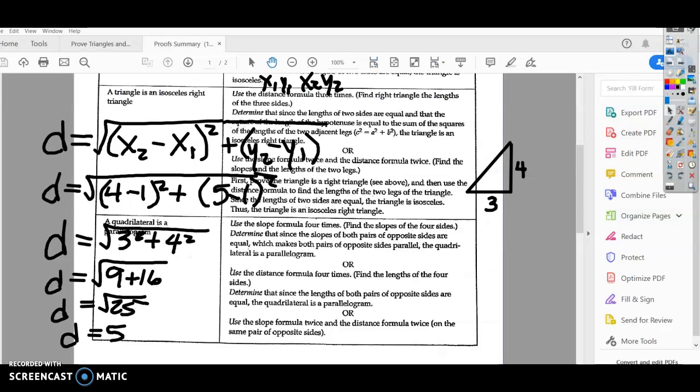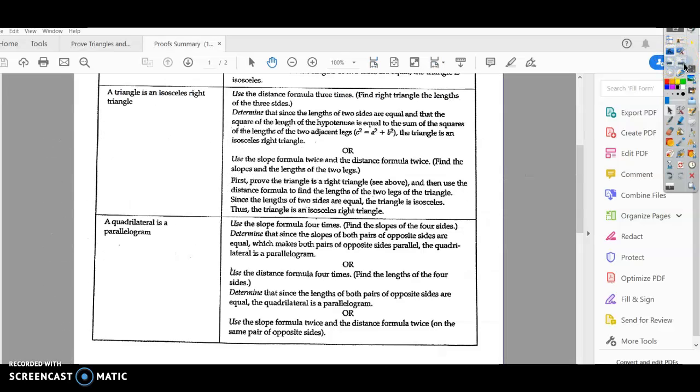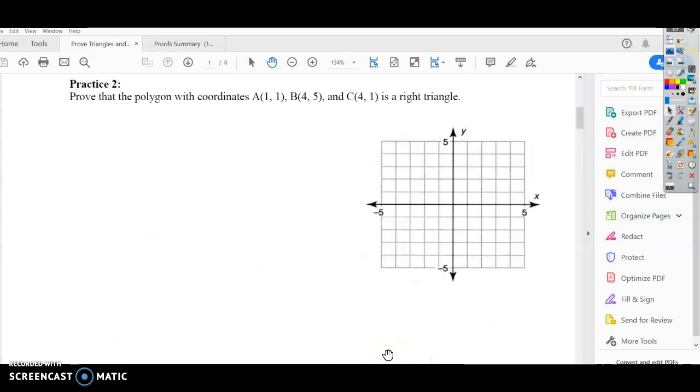All right, guys. Here's another example. The problem says, let's go back to the problem here. The problem says, prove that the polygon with these coordinates is a right triangle.